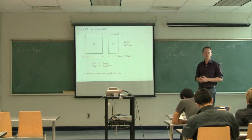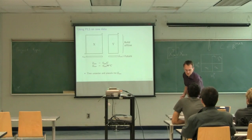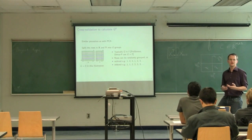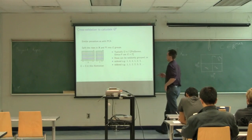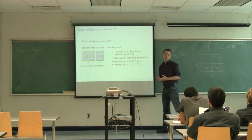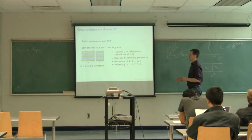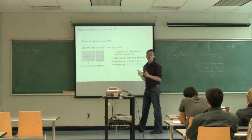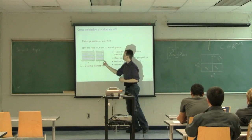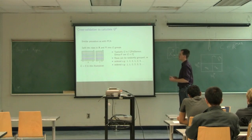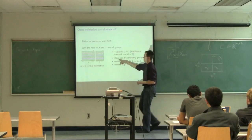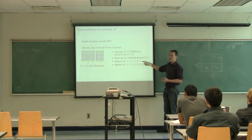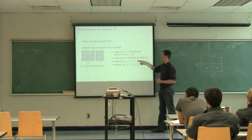Let's talk about cross-validation. How does the software determine the number of components to use? It's exactly analogous to PCA: we calculate a quantity called Q-squared. We split the data into groups. With PCA we have a single X matrix, but with PLS we have two. We split them in exactly the same way, keeping coherence between the two matrices — splitting along the rows. You can choose that row grouping randomly, or you can order them as most software packages do: rows 1, 2, 3, then 1, 2, 3 repeating.